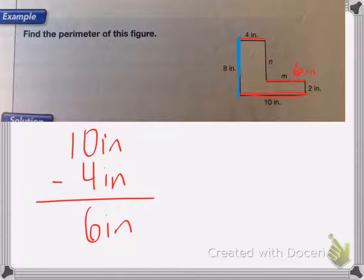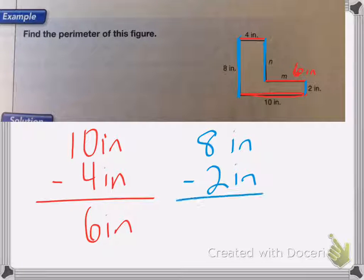I'm going to do the same thing with my width. The total width is 8 inches. And I know this little width here is 2, and I need to find what this width is. So 8 inches, if I take 8 inches and I subtract the 2 inches I have, it will give me the length of N. So 8 inches minus 2 inches is, again, 6 inches. So N is equal to 6 inches.